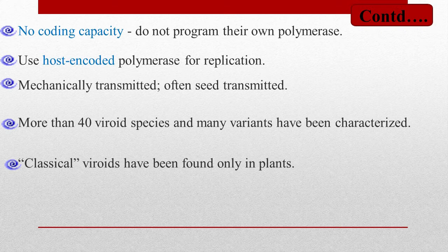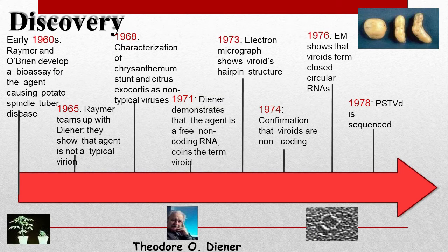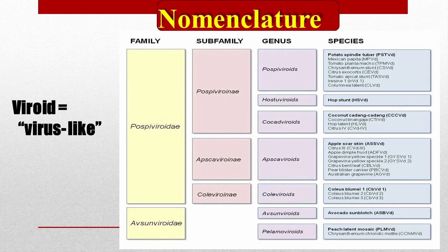More than 40 viroid species and many variants have been characterized so far. Classical viroids have been found only in plants. In 1971, Theodor Diener demonstrated that the agent is a free non-coding RNA and coined the term viroid.